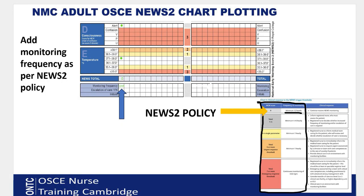For the monitoring frequency, refer to your NEWS policy. A score of zero means the patient is doing well, so monitoring can be every 12 hours. Write '12HR' — capital H, capital R — in the monitoring frequency box. You don't need to write the full word 'hourly'; just fit 12HR neatly in the box.